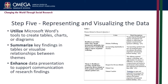The final step in the data analysis spiral involves representing and visualizing the data. Microsoft Word offers various tools for creating tables, charts, or diagrams to enhance data presentation. You can create tables to summarize key findings, or use charts and diagrams to visualize the relationships between themes or sub-themes. These visual representations provide a comprehensive overview of the qualitative data and support communicating your research findings.